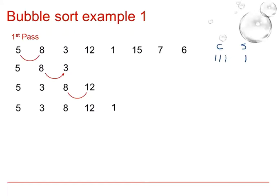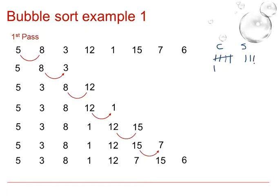Comparing then the 12 and the 1, we have both a comparison and a swap. Comparing then the 12 with the 15, we have a comparison but no swap. Finally we compare the 15 and the 7 which is a comparison and a swap and then the 15 and the 6 which will also be a comparison and a swap. That is the first pass and we will note that we have made 7 comparisons and 4 swaps.